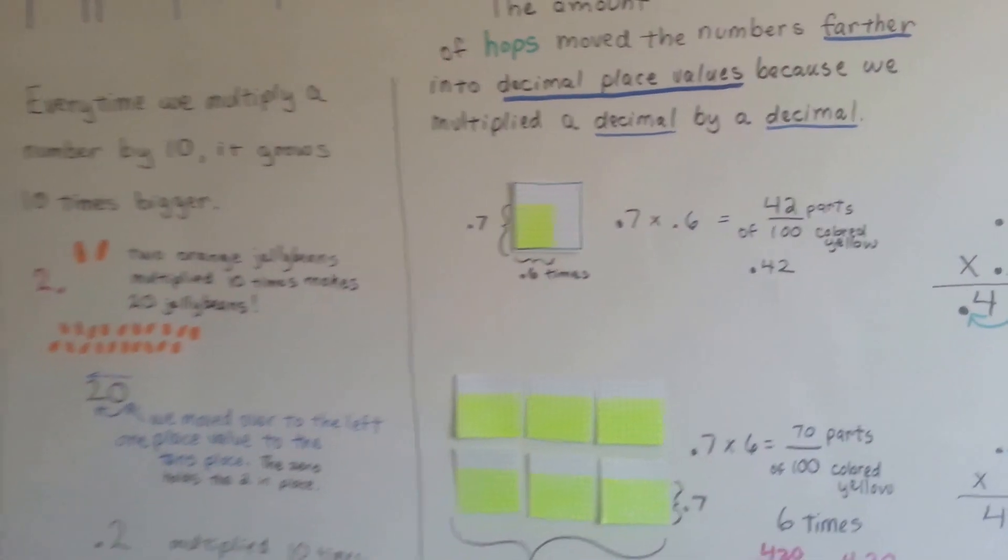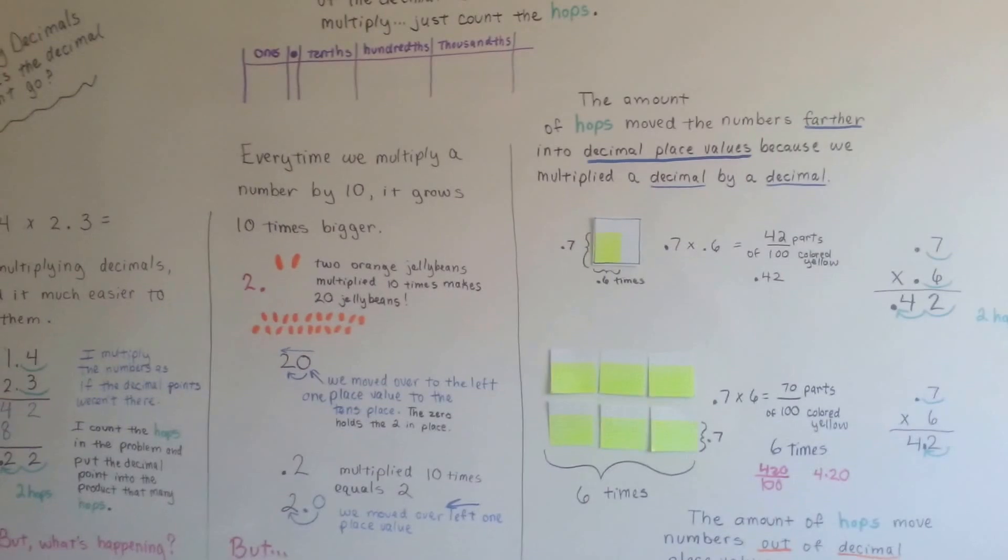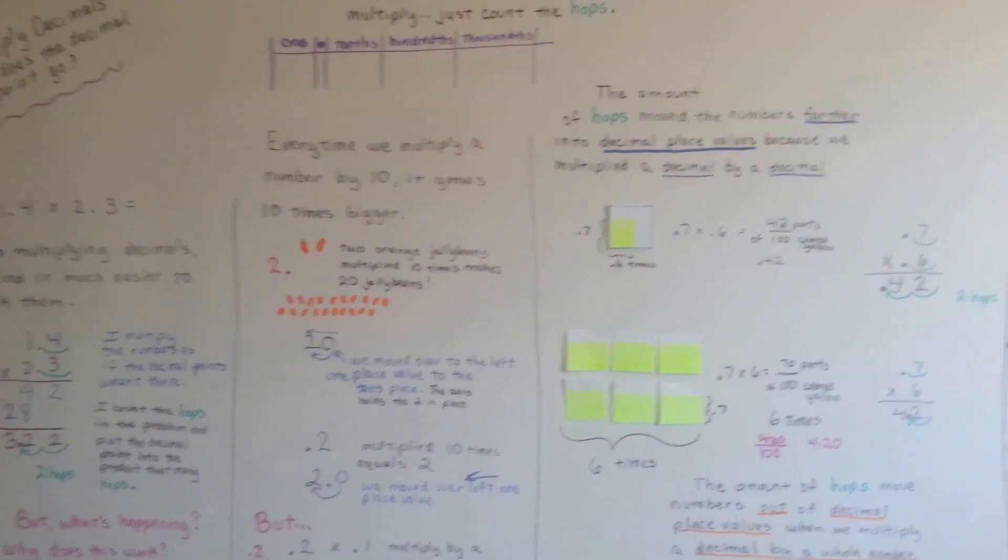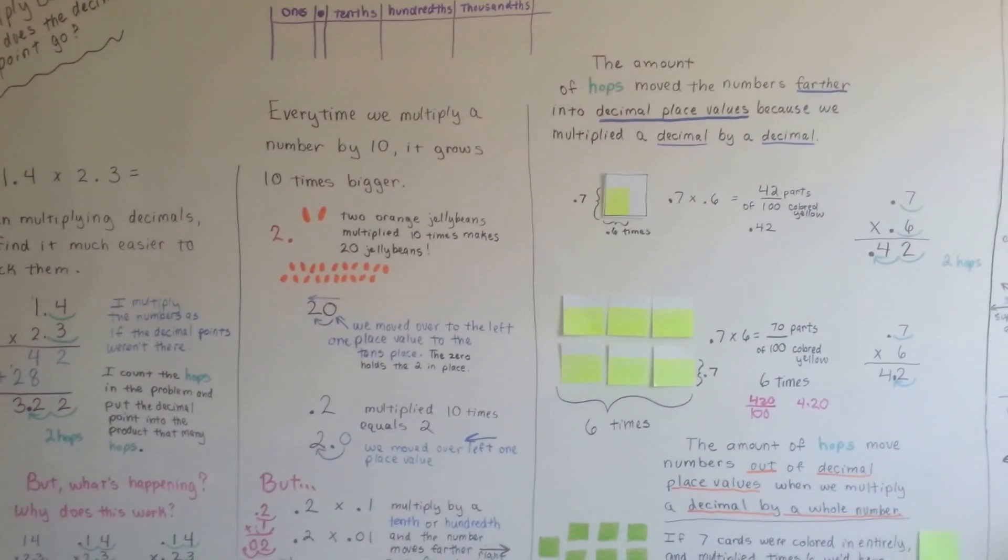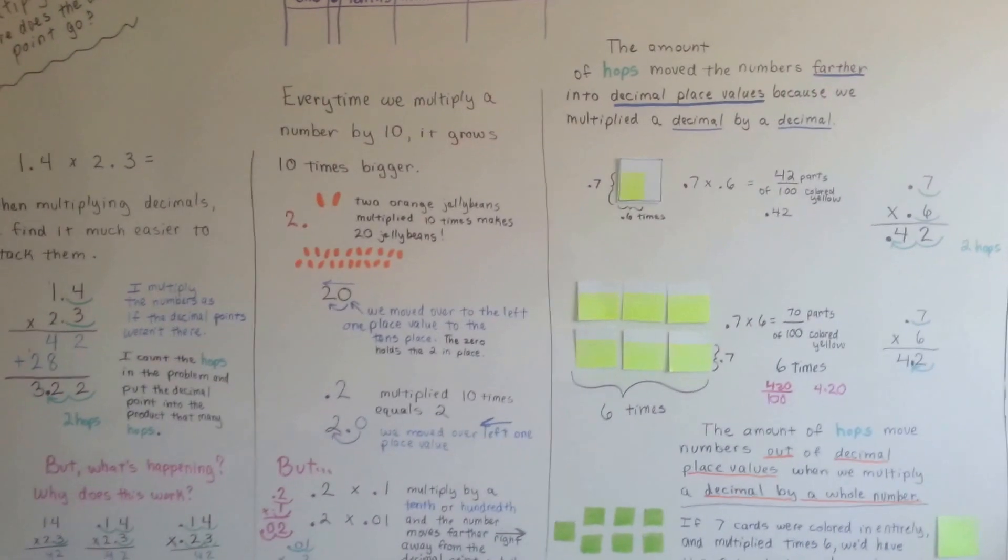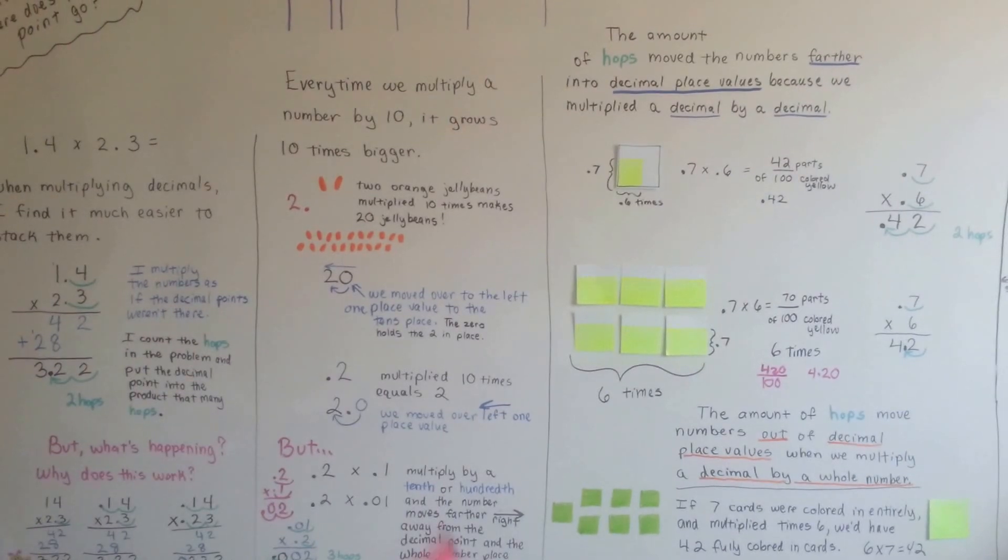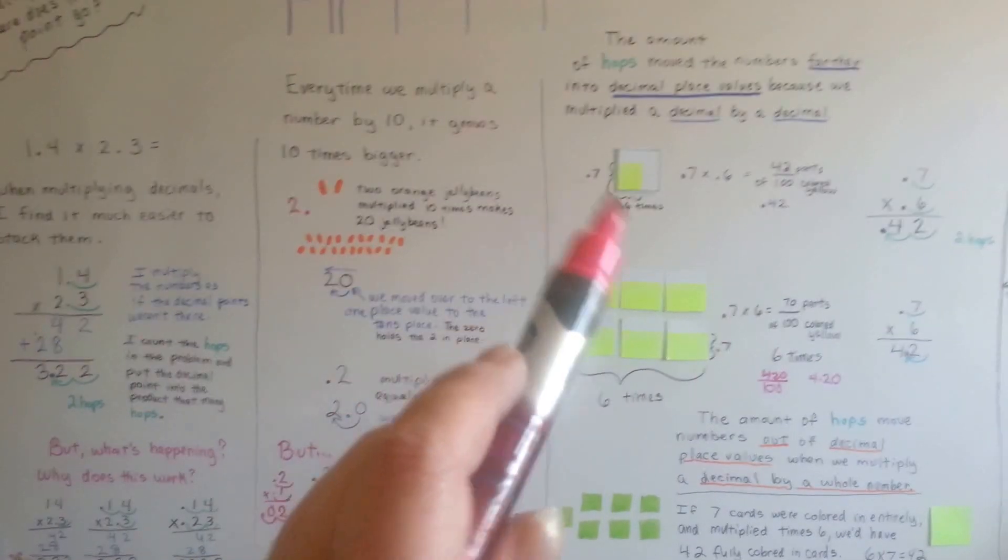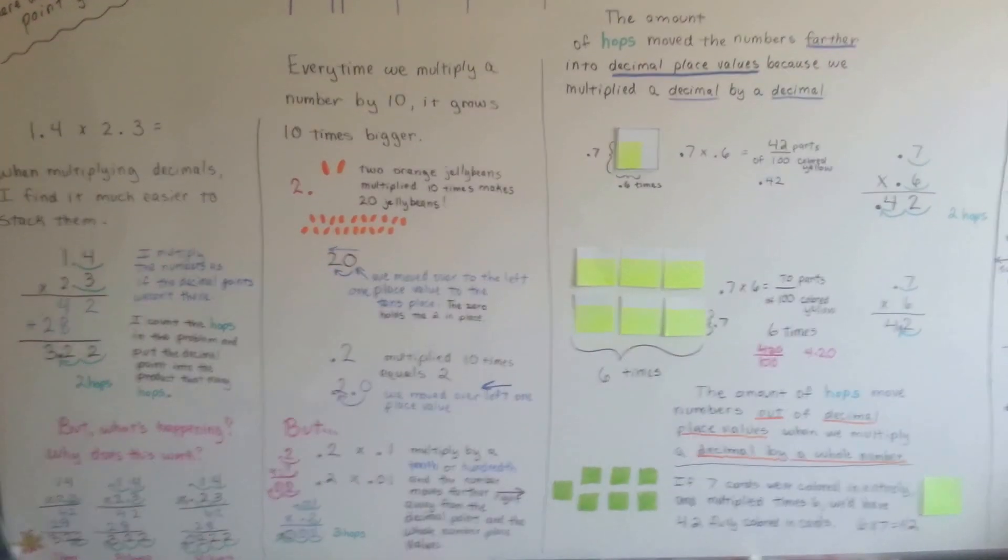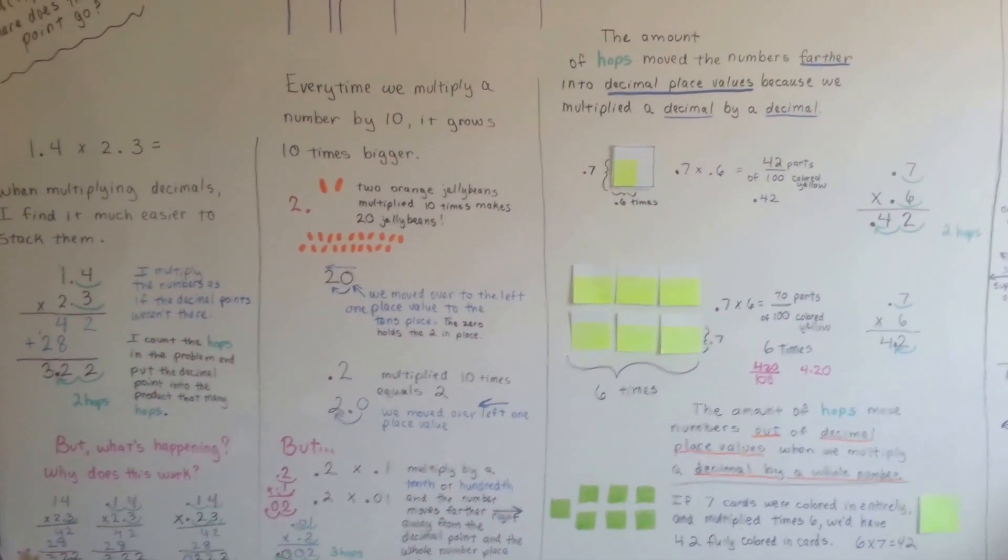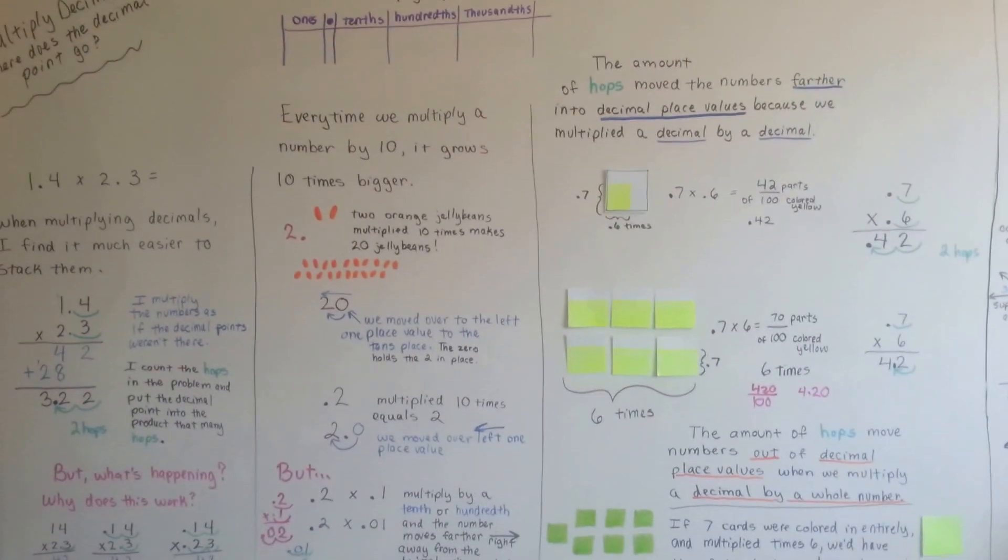So, that is why we can know the place of the decimal before we even multiply by just counting the hops in the equation. And that's why counting the hops works. It's going to be the easiest part of multiplying decimals for you. Counting hops. Your teachers may not completely like it, but they won't mind it if you can explain to them that you know that when you multiply a decimal by a decimal, it puts it farther into the decimal places. And when you multiply a decimal by a whole number, it moves it out of the decimal places. If you can remember that, they won't mind you hopping. As long as they know that you understand why you're hopping. That's the big deal. That's what they want to know.